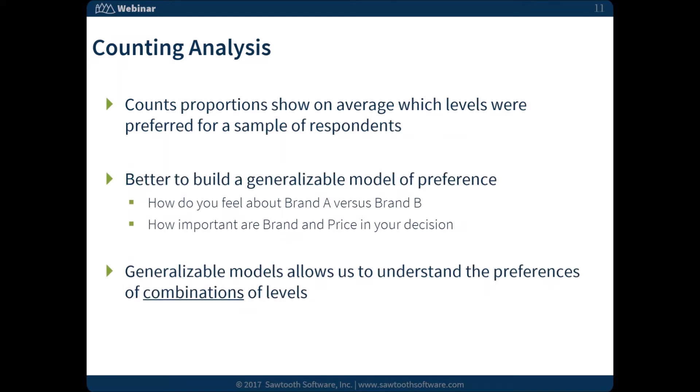Counts analysis shows us, on average, which levels were preferred for our sample. But it's much better to build a generalizable model of preferences. That gives us information about how people feel about brand A versus brand B, and also helps us understand the relative importance of attributes — how brand and price compare to each other. Building a generalizable model allows us to evaluate preferences for combinations of attributes — we can put together an entire fridge configuration and understand if it's more or less preferred than a different configuration.